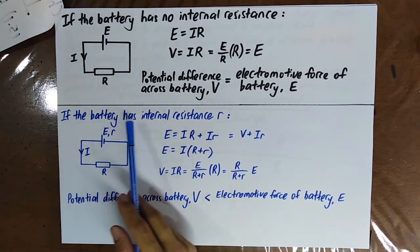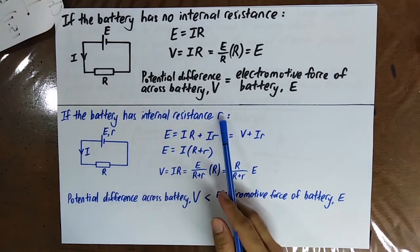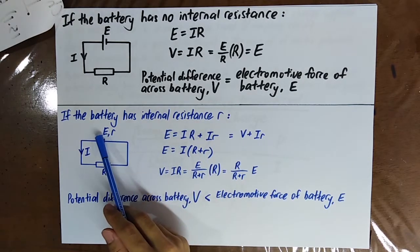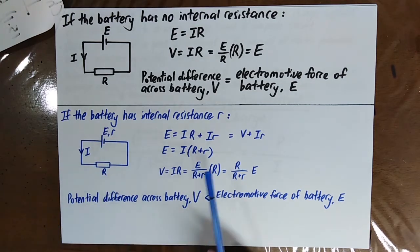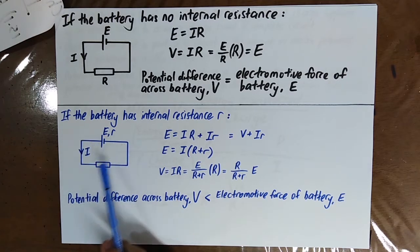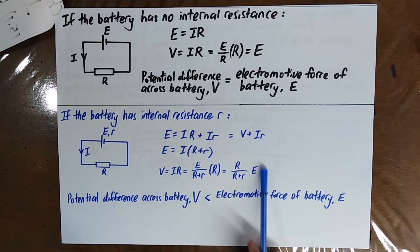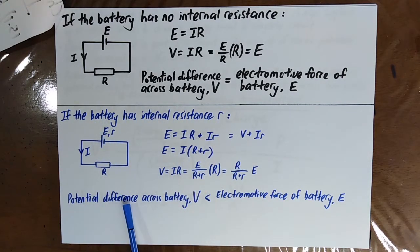If the battery has some non-zero internal resistance, we normally denote the internal resistance as r and the electromotive force as EMF or E. If the battery has internal resistance, then E equals Ir plus IR. The potential difference across the battery is V equals IR, which is just a fraction of the electromotive force. So when there is internal resistance inside the battery, the potential difference across the battery will be smaller than the electromotive force.